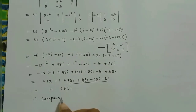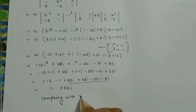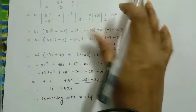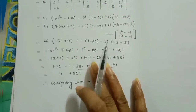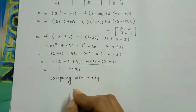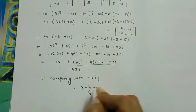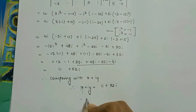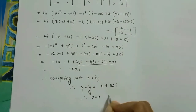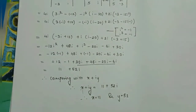Comparing with x + iy: since the determinant equals 11 + 52i, we get x = 11 and y = 52.